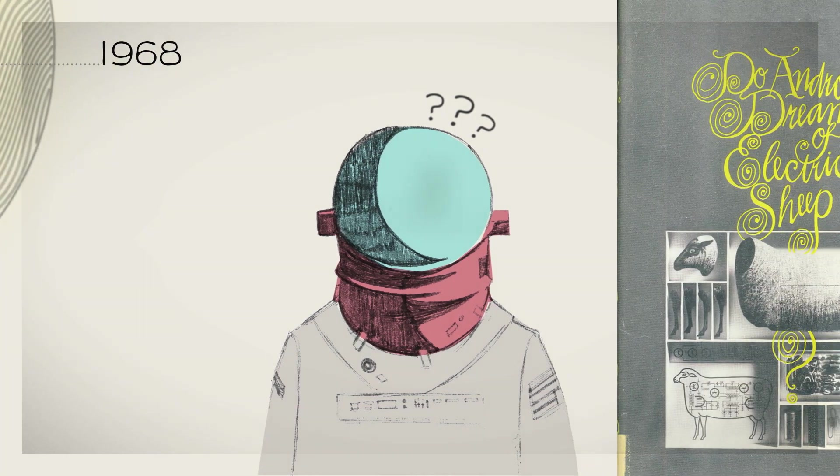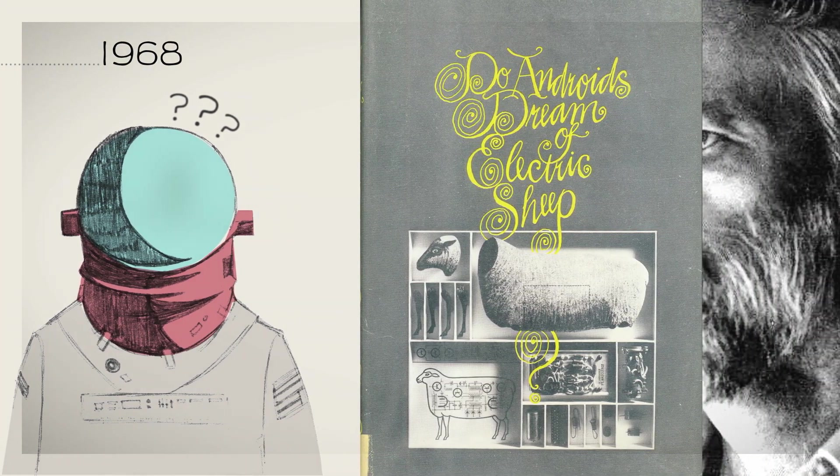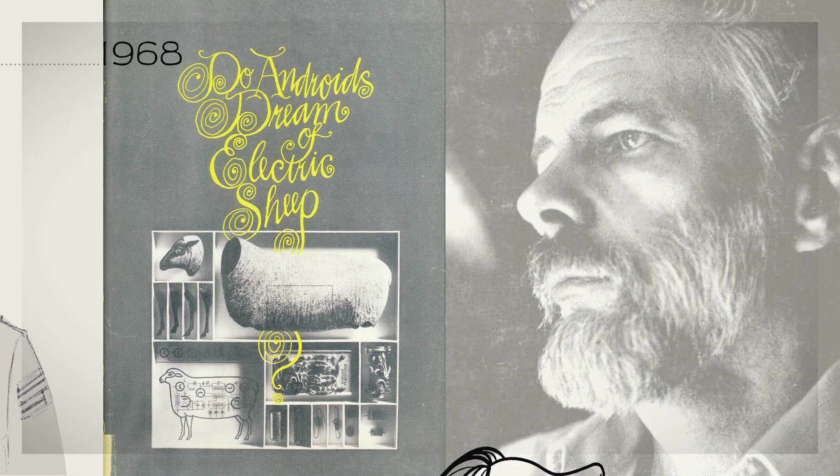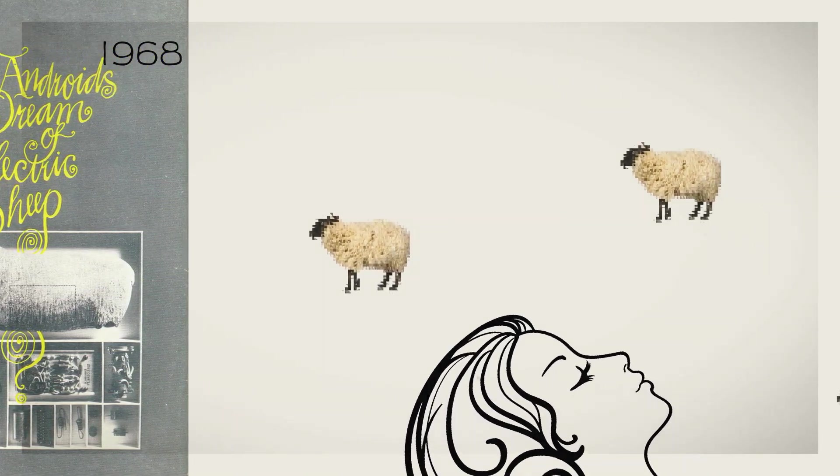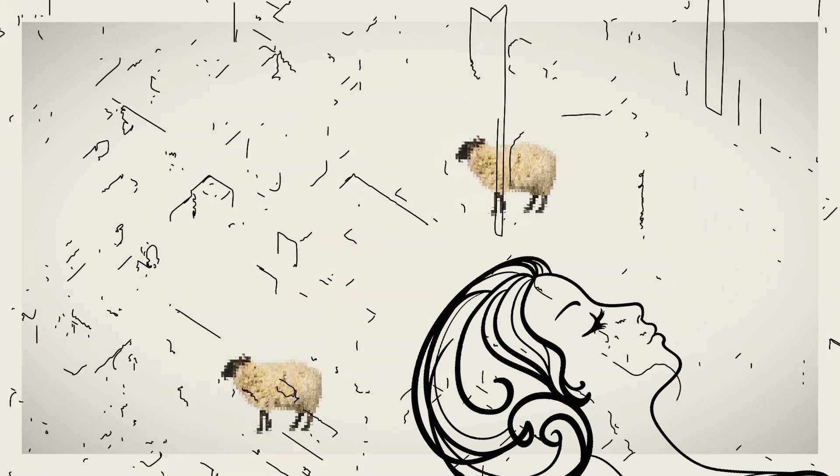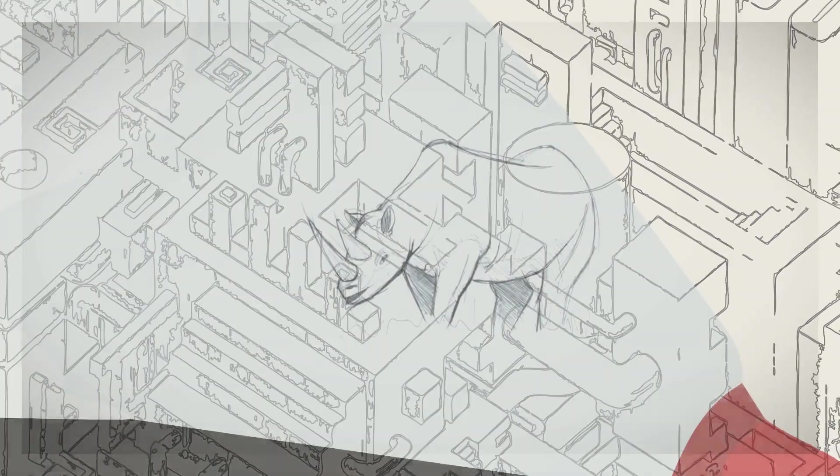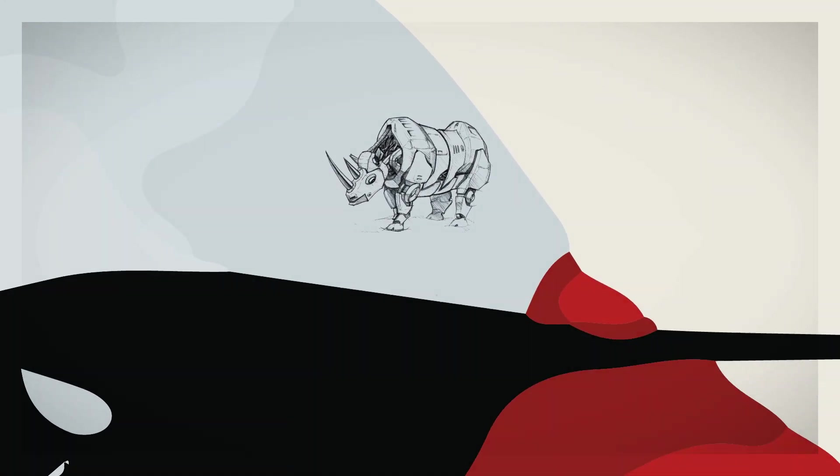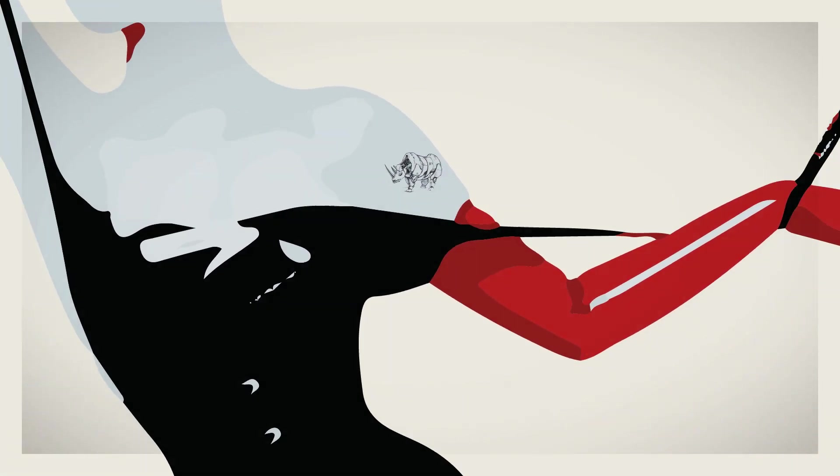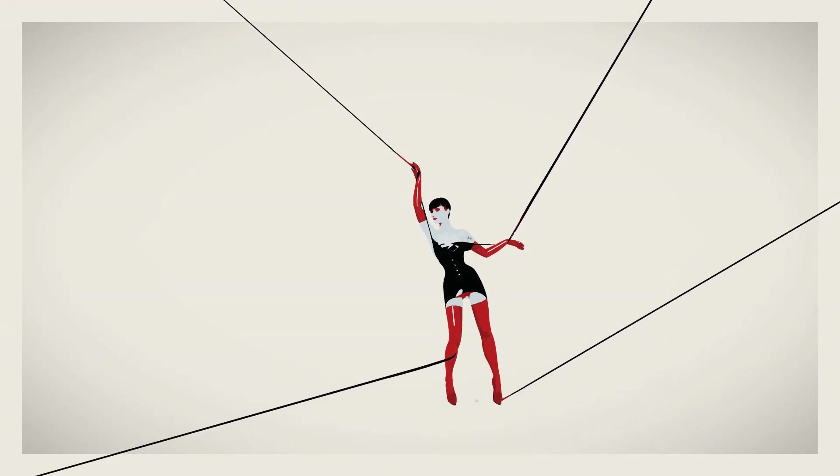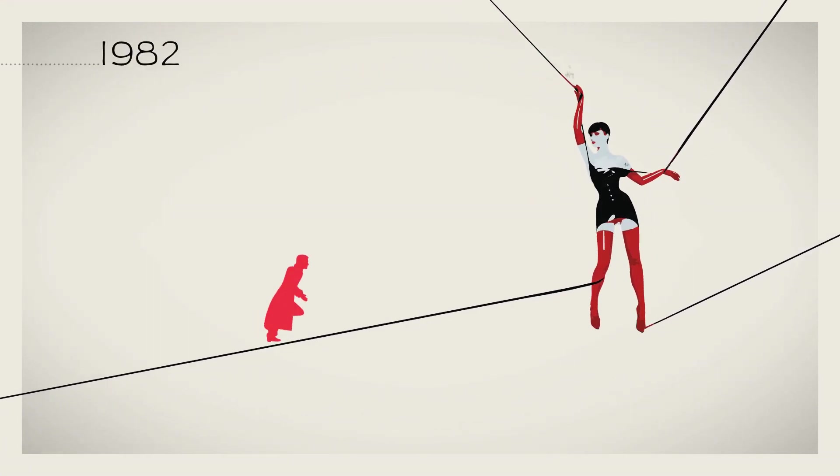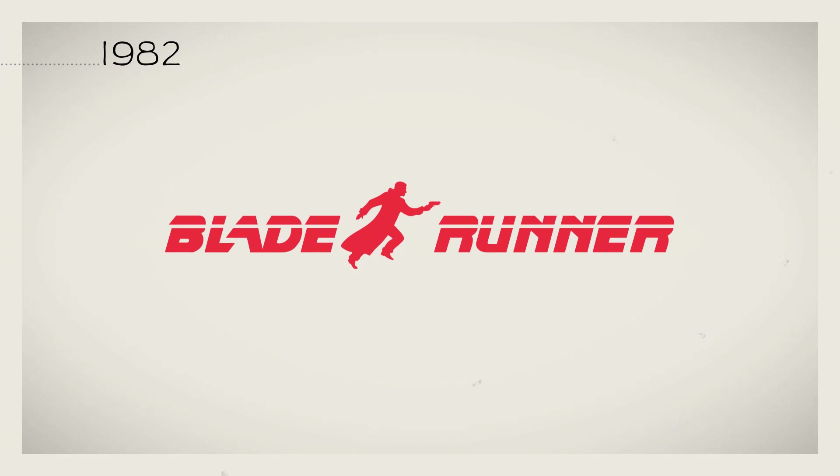Do Androids Dream of Electric Sheep is a 1968 novel by Philip K. Dick. It tackles the topic of what is to be human or not. The setting is a dystopian and post-apocalyptic future where artificial copies of animals are status symbols to be desired and artificial copies of humans are used as though they were slaves. The 1982 film Blade Runner is based on the novel.